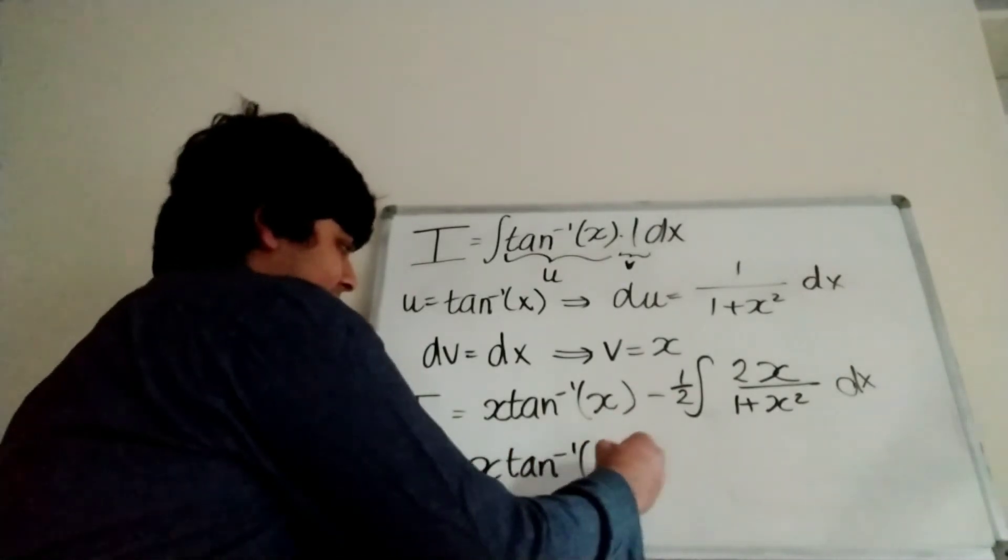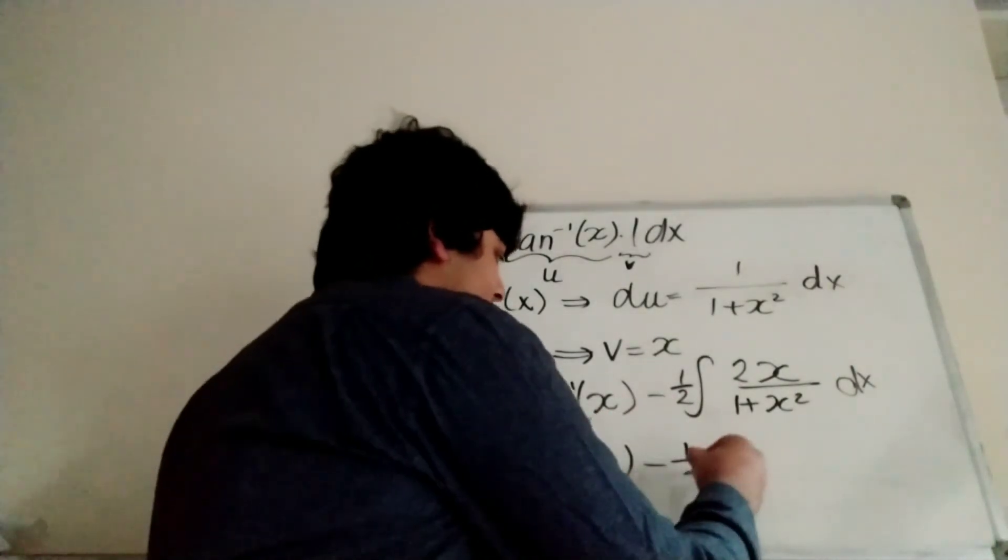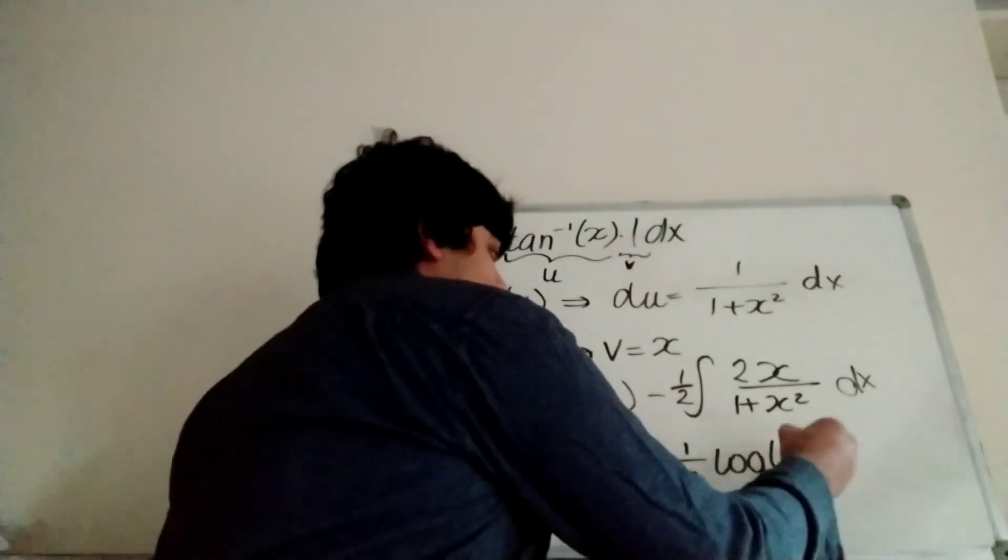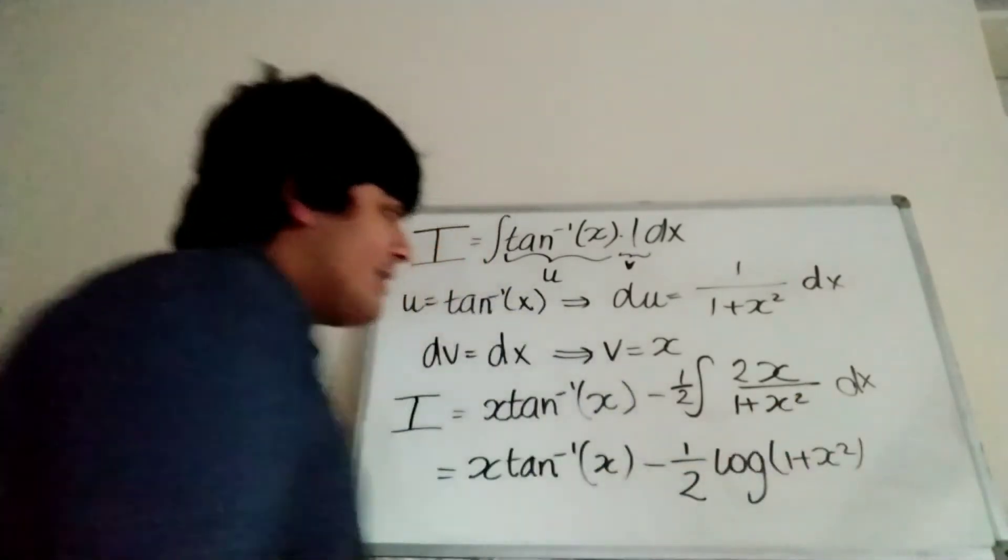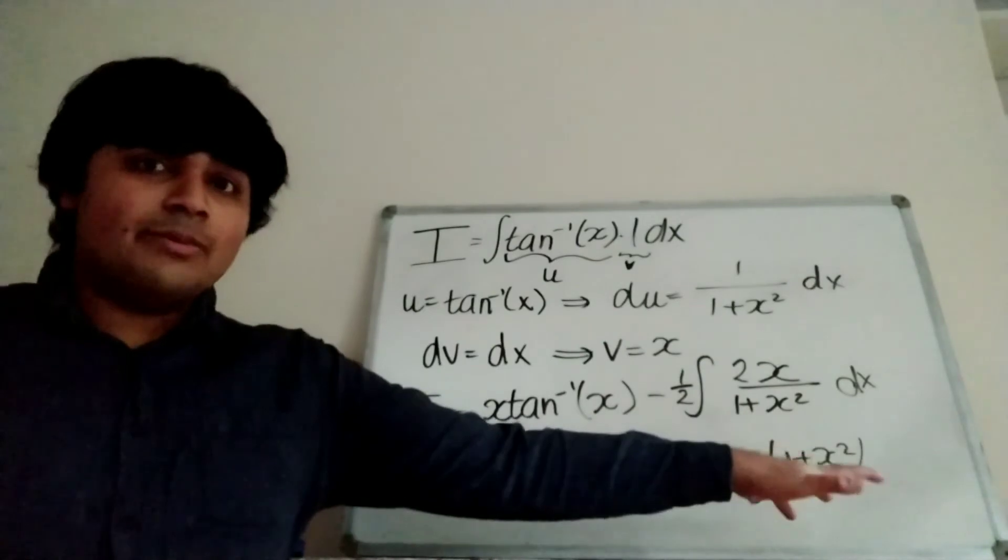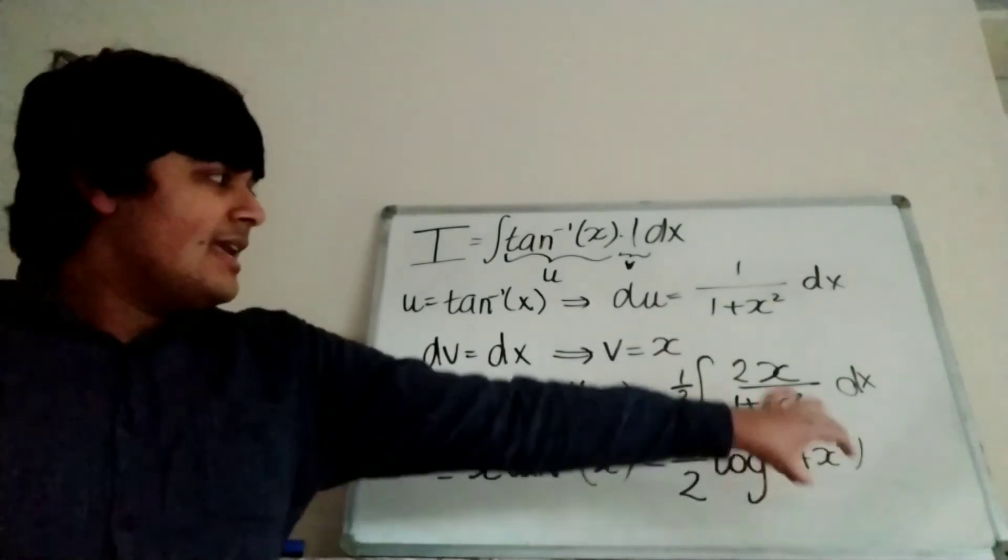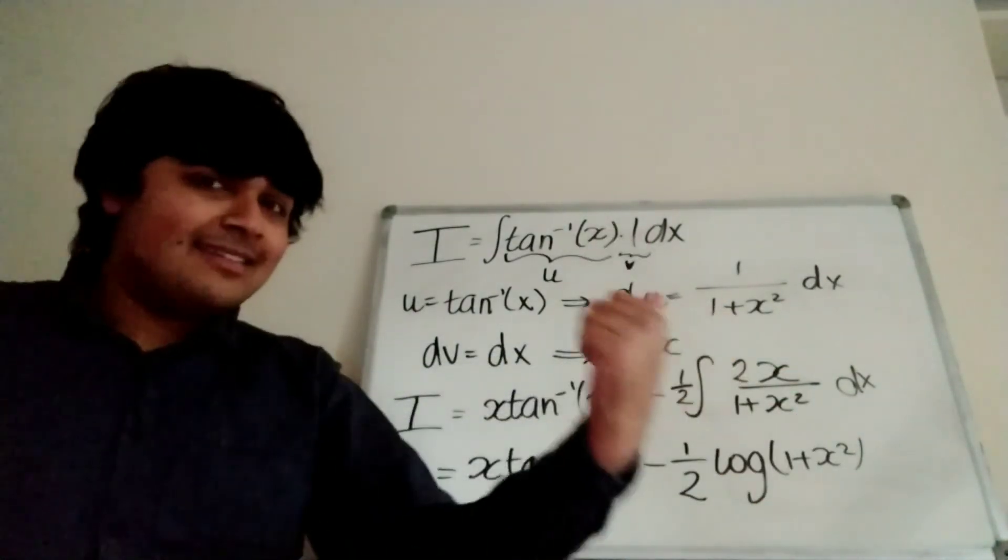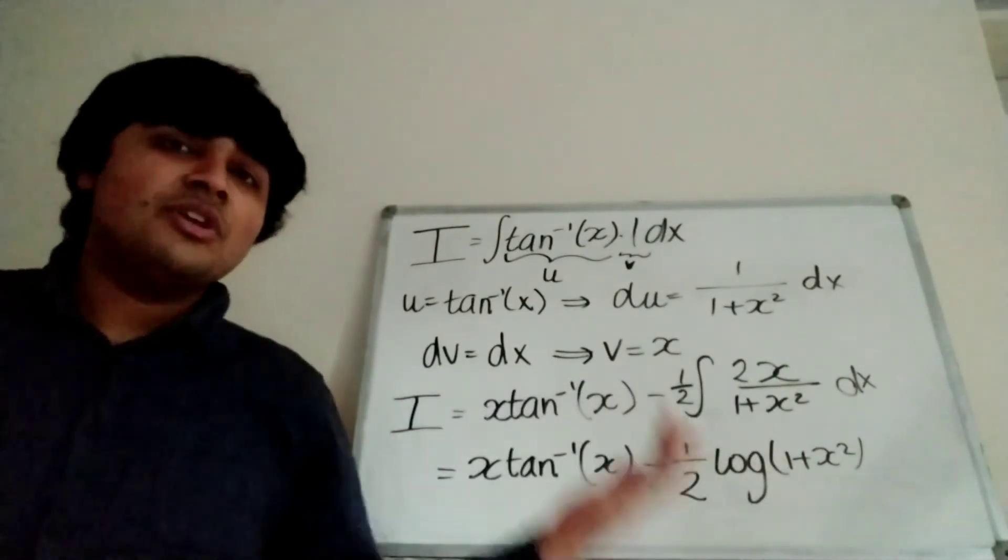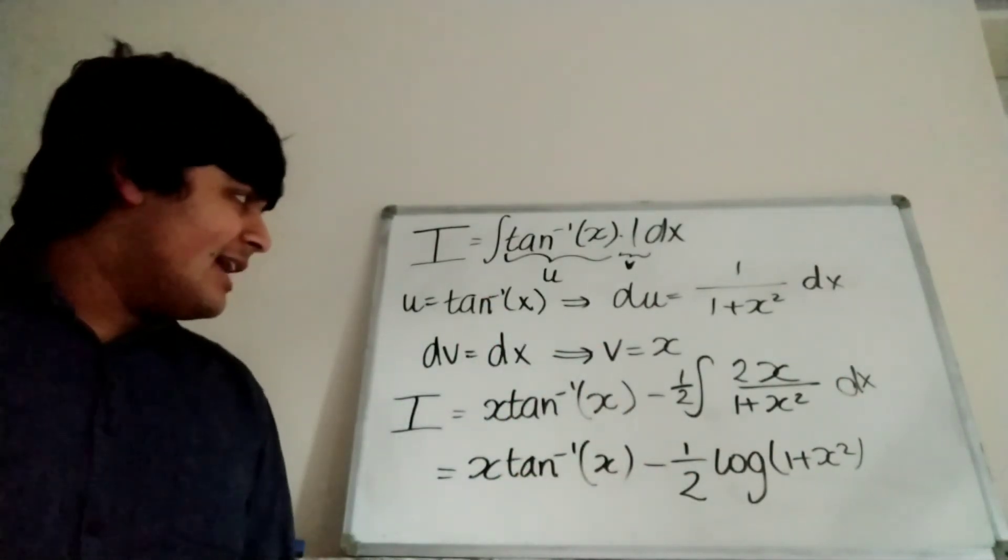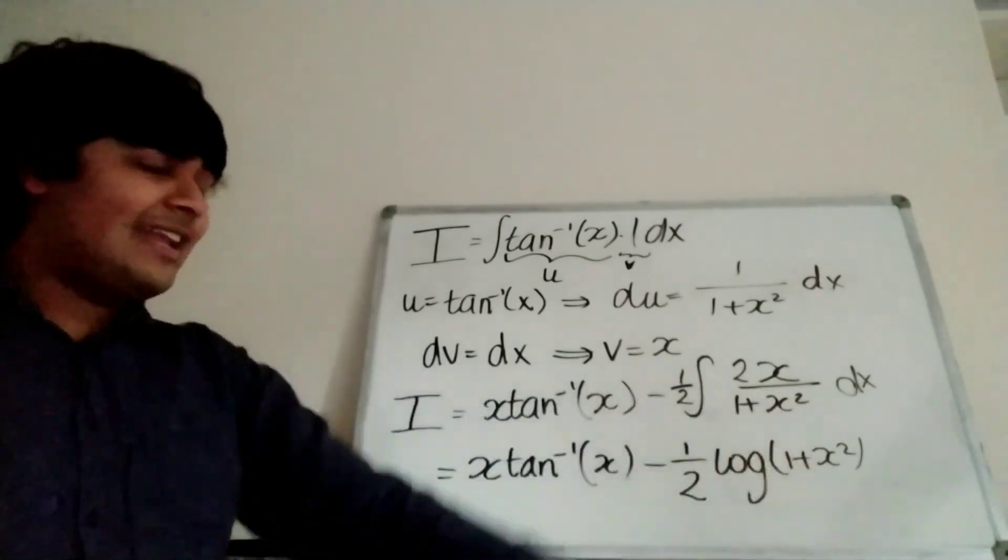Let me just write it down. So we still have x inverse tangent of x there minus 1 half log 1 plus x squared. So the derivative of log 1 plus x squared is this guy here. Going from this line to this line, it's either standard or you could do a u substitution. u equals 1 plus x squared and then it'll be quite clear.